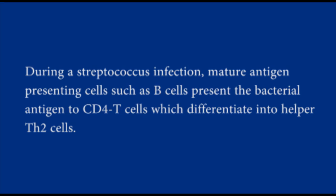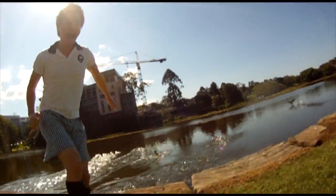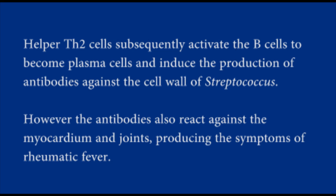Well, Billy, during a streptococcus infection, mature antigen-presenting cells, such as B cells, present the bacterial antigen to CD4 T cells, which differentiate into helper Th2 cells. Helper Th2 cells subsequently activate the B cells to become plasma cells and induce the production of antibodies against the cell wall of the streptococcus. However, the antibodies may also react against the myocardium in joints, producing the symptoms of rheumatic fever.